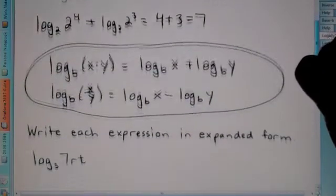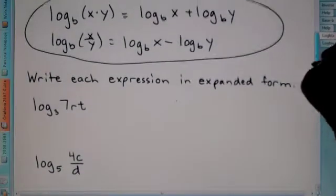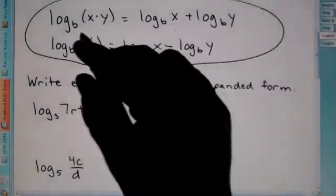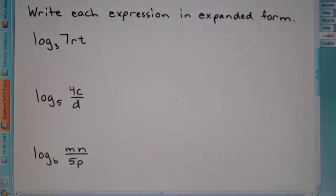So, our first problem here, it says write each expression in expanded form. So, we want to go from here to there. So, write it in expanded form. We don't want to have any term being multiplied by the next.